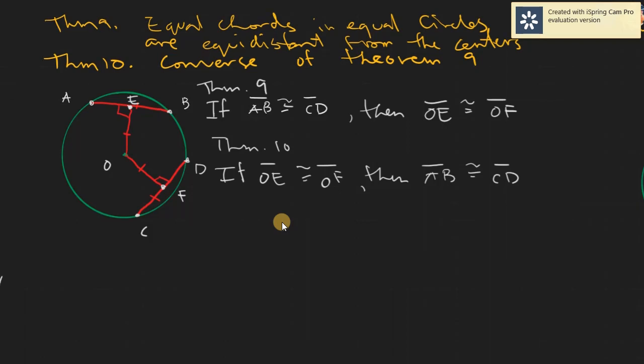Today we will be discussing theorem 9 and 10. Theorem 9 states that equal chords in a circle or equal circles are equidistant from the center, and theorem 10 is just the converse of theorem 9, meaning equidistant chords in a circle are equal chords.